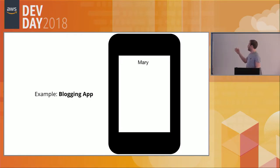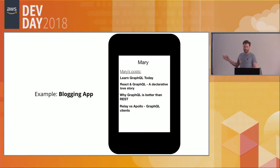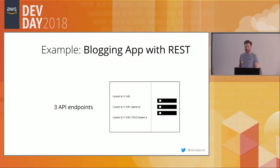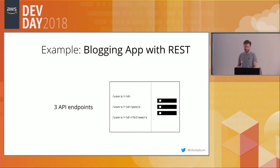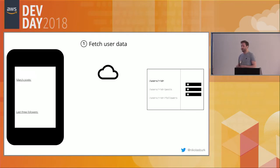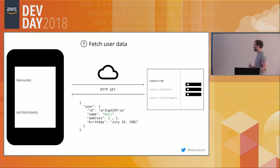To understand how it works, consider a simple blogging application with a profile screen showing the user's first name, a list of posts the user has written, and the last three followers. With a REST API you might design three different endpoints: a users/id endpoint returning user info, a users/id/posts endpoint returning all posts of a user, and a users/id/followers endpoint returning all followers.